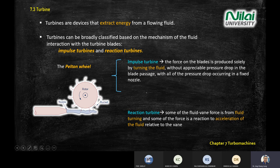There are two types of turbine: impulse and reaction. The one you are seeing here is the impulse turbine. The force on the blades is produced by the fluid acting on them.